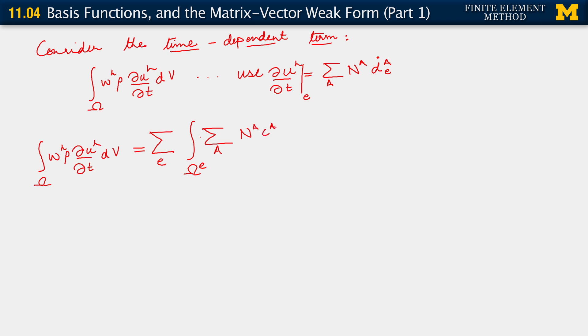Multiplied by rho. And for the next term, we have now sum over b, N_b d_b^e dot.